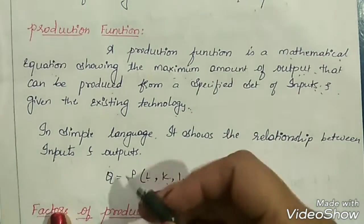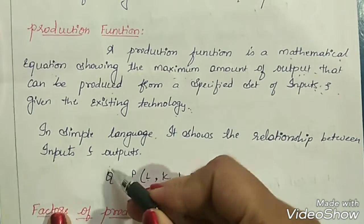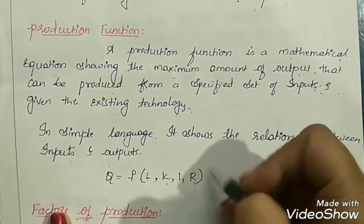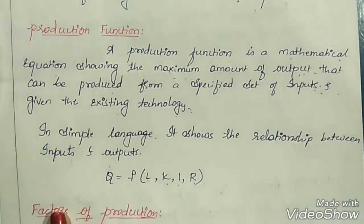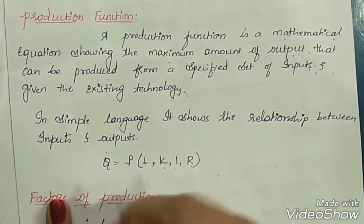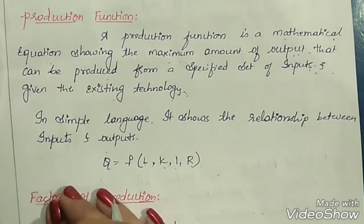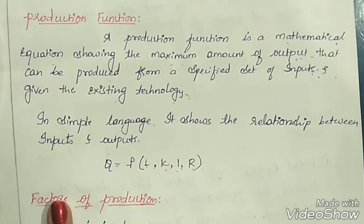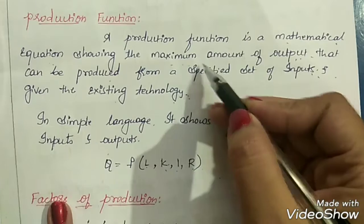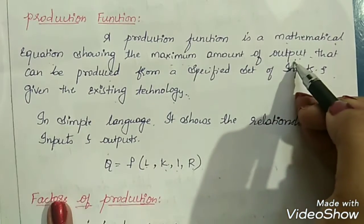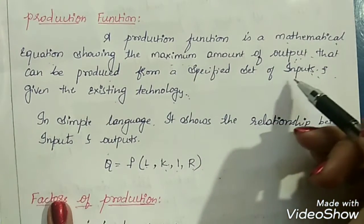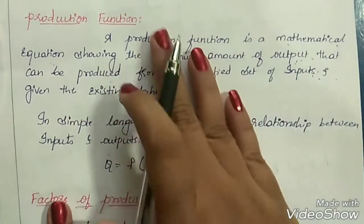Basically, output Q is dependent upon all our inputs. What we input, according to that only we will get the output. It shows the maximum amount of output that can be produced from a specified set of inputs.